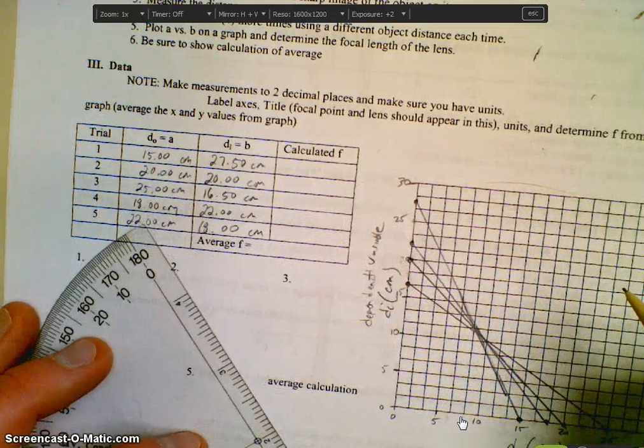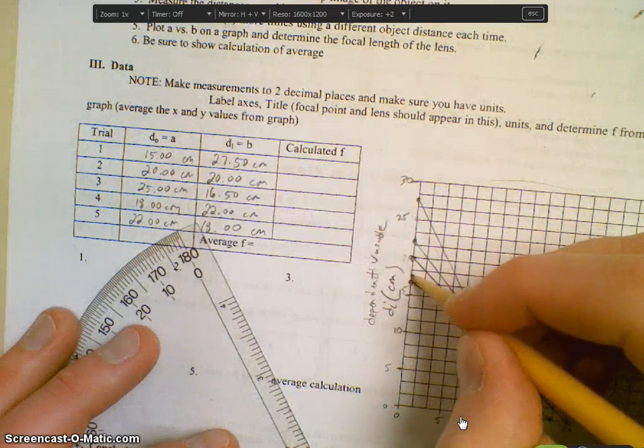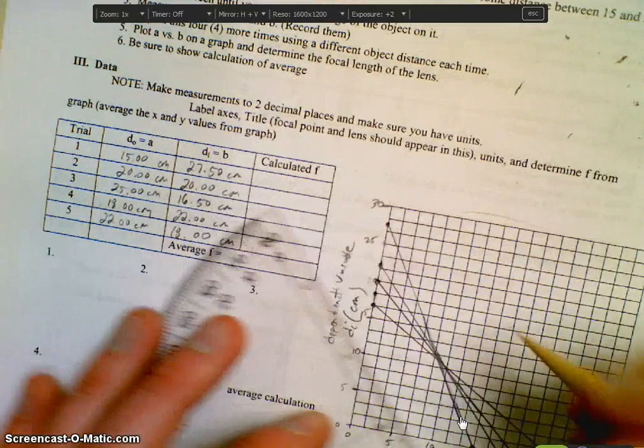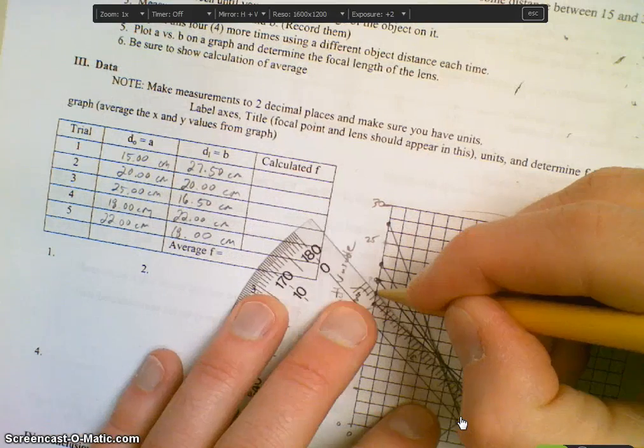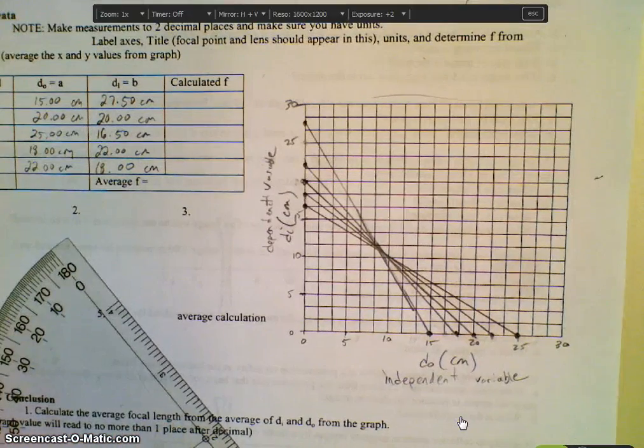And then finally 22 and 18, so that one's, there's 15, 17 and a half, that's 18, 22. So there's what our graph should look like.